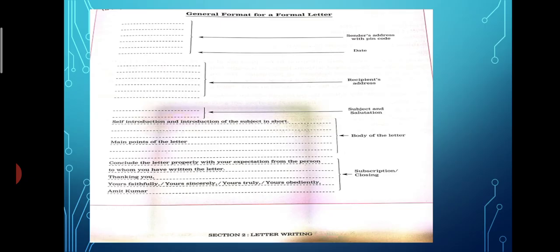So now if you see here, this is a general format for a formal letter. If you see here, it says the sender's address, left side you can see these lines. Then you can see the sender's address with pin code. After that you have the date. Then you have the recipient's address. Then you have the subject and the salutation. Then in that you have to write the self-introduction and introduction of the subject in short. Then the body of the letter. Now body of the letter is the main content what you want to convey to the opposite person. And subscription and closing means conclude the letter properly with your expectation from the person to whom you have written the letter. So whatever you are expecting from the person you are writing, like in the terms of reply, you have to be very crystal clear as to what you are writing in your body.